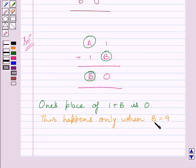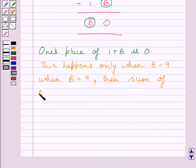Now when B is equal to 9, then the sum of these two numbers is 90. So we can write, when B is equal to 9, then sum of A1 and 1B is 90.